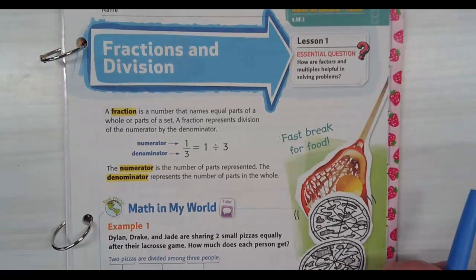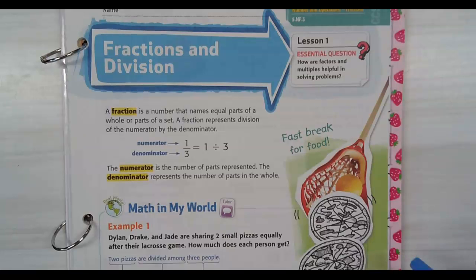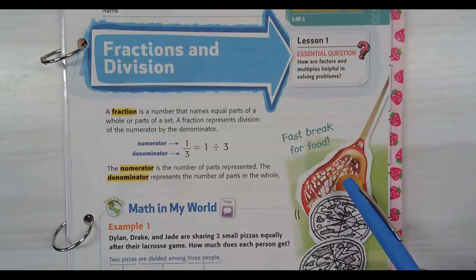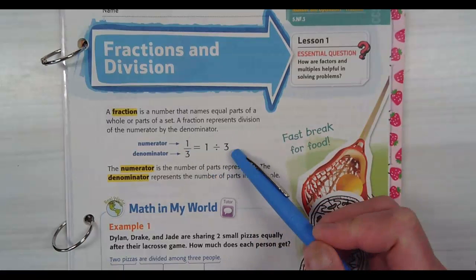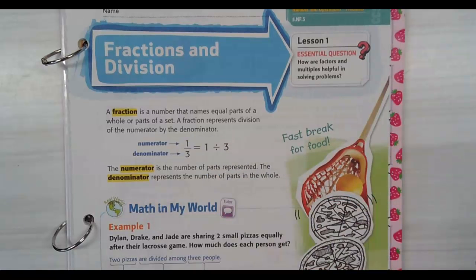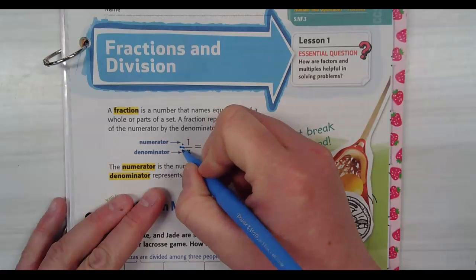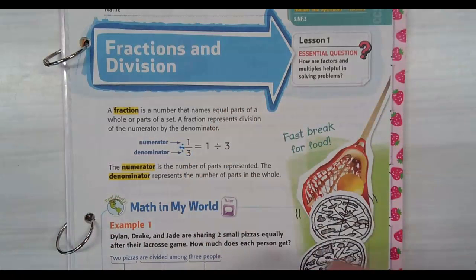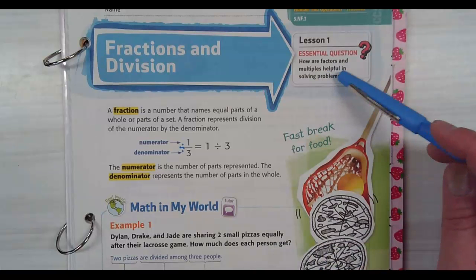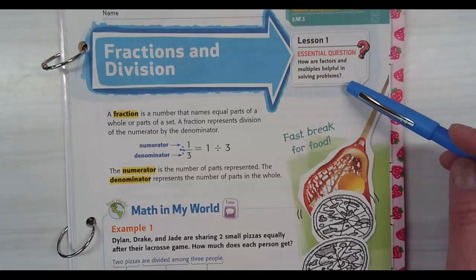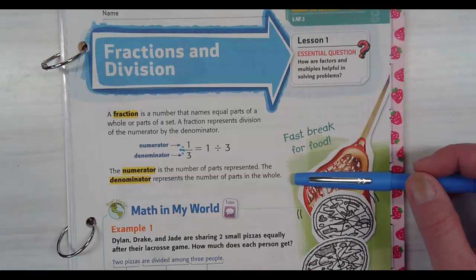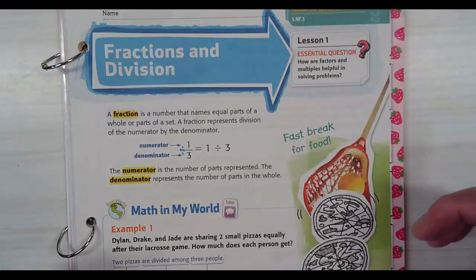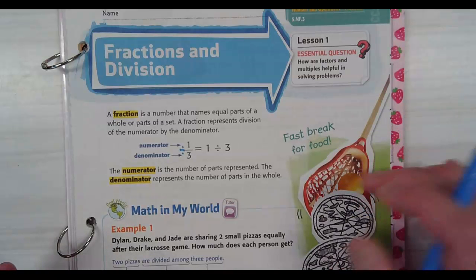Fractions and division. A fraction is a number that names equal parts of a whole or parts of a set. A fraction represents division of the numerator by the denominator. So 1/3 really means 1 divided by 3 — that line means division. The denominator tells you how many parts are in a whole; the numerator tells you the number of parts you have.